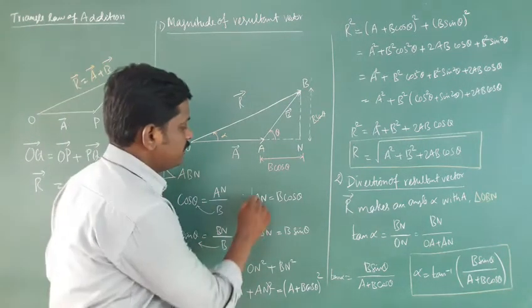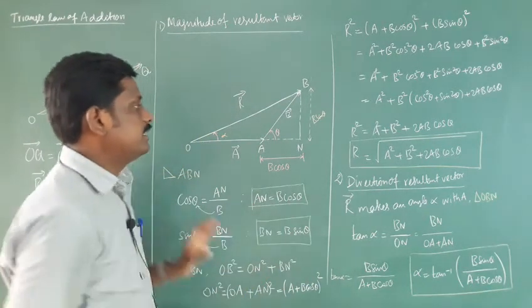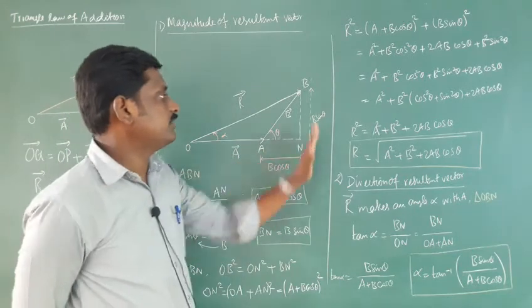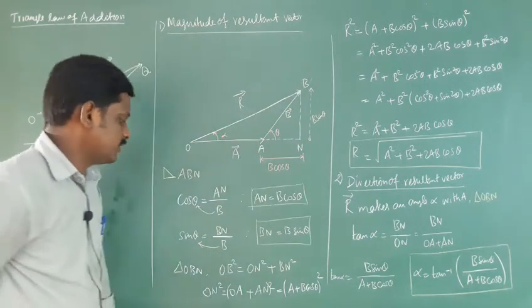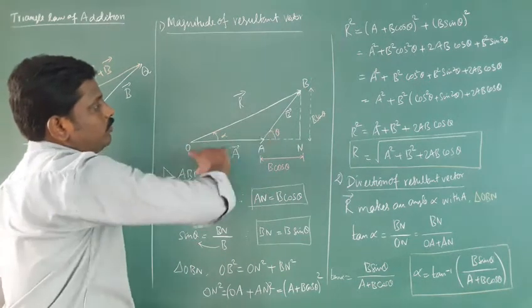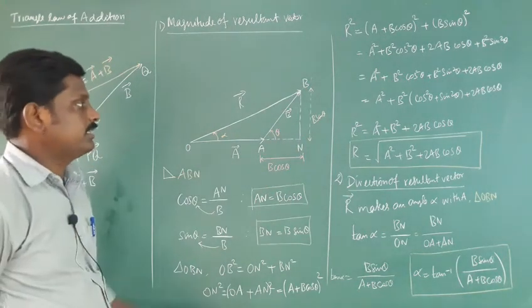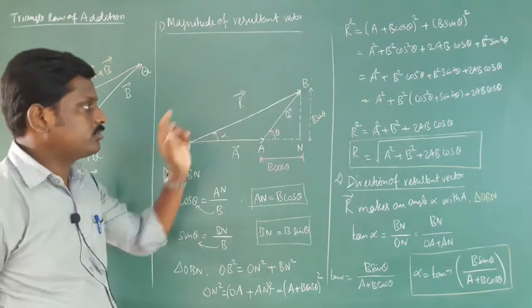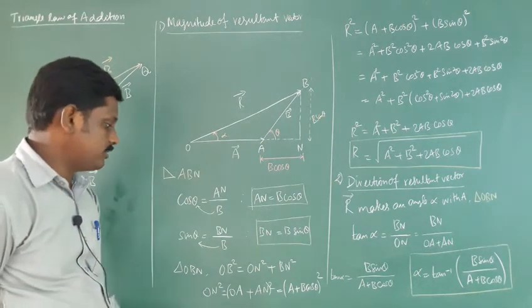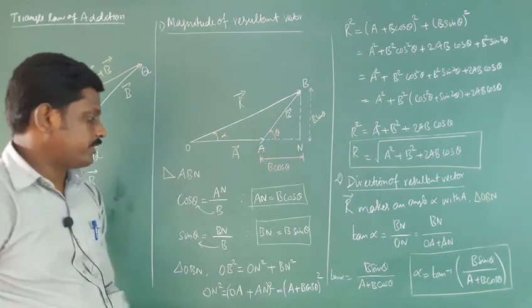So AN equals B cos theta, which is the horizontal component, and BN equals B sin theta, which is the vertical component. Now in triangle OBN, we apply the Pythagorean theorem: OB squared, the hypotenuse squared, equals the opposite squared plus the adjacent squared, giving OB squared equals ON squared plus BN squared.